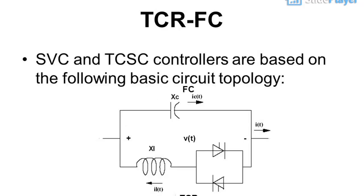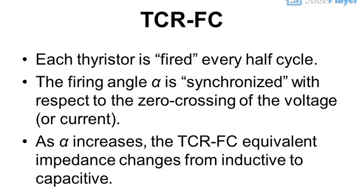TCR/FC: the SVC and TCSC controllers are based on the following basic circuit topology — Fixed Capacitor (FC) plus Thyristor Switched Reactor (TSR). Each thyristor is fired every half cycle. The firing angle alpha is synchronized with respect to the zero crossing of the voltage or current. As alpha increases, the TCR/FC equivalent impedance changes from inductive to capacitive.